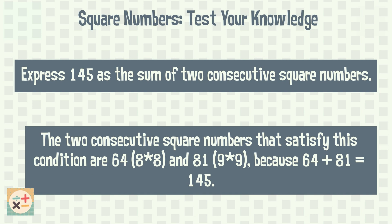The two consecutive square numbers that satisfy this condition are 64 and 81, because 64 plus 81 equals 145.